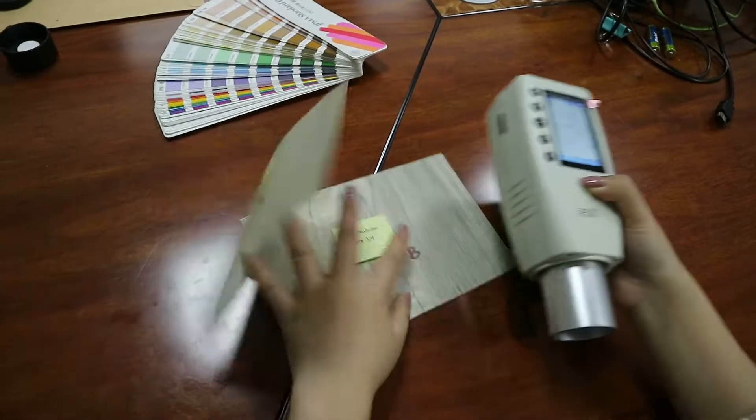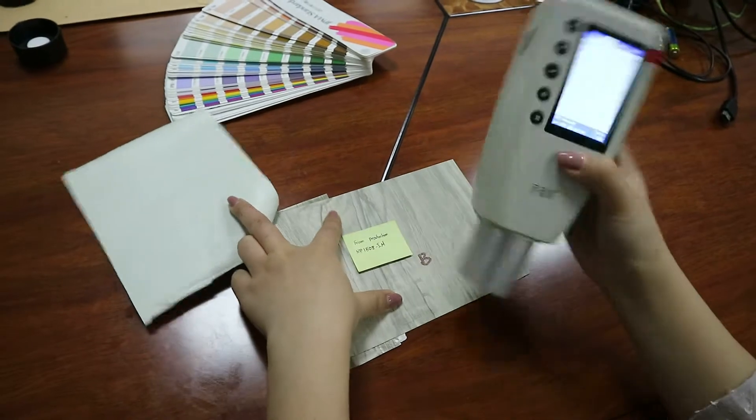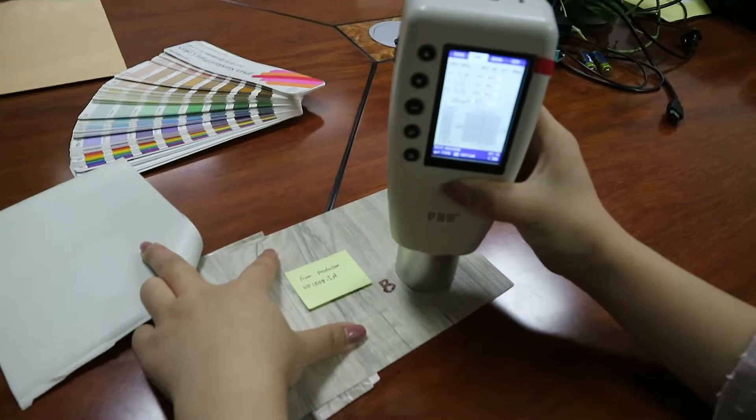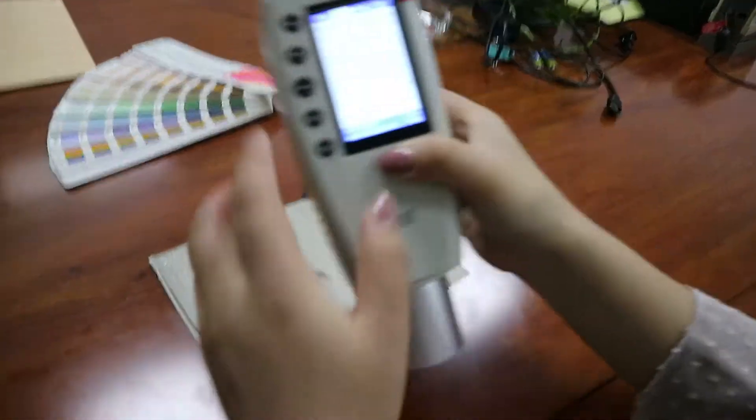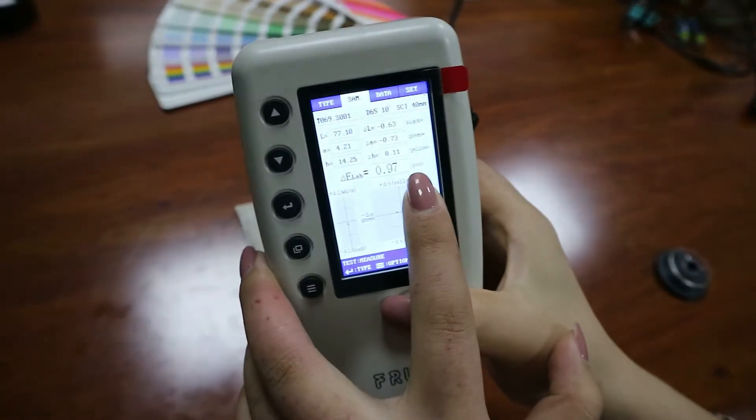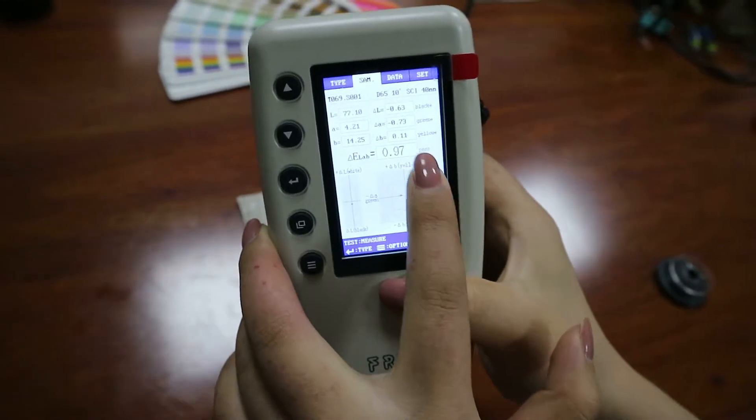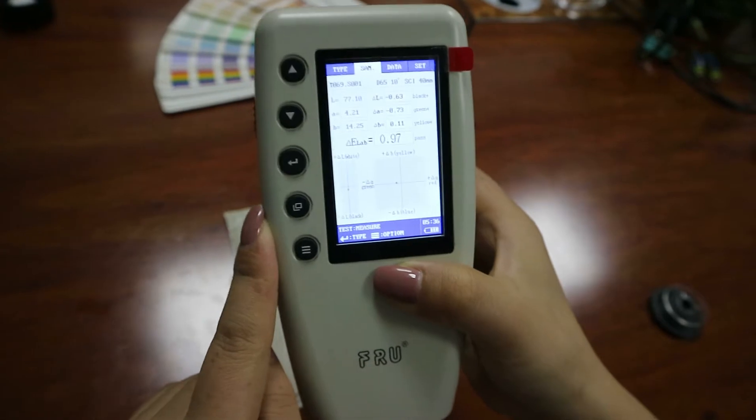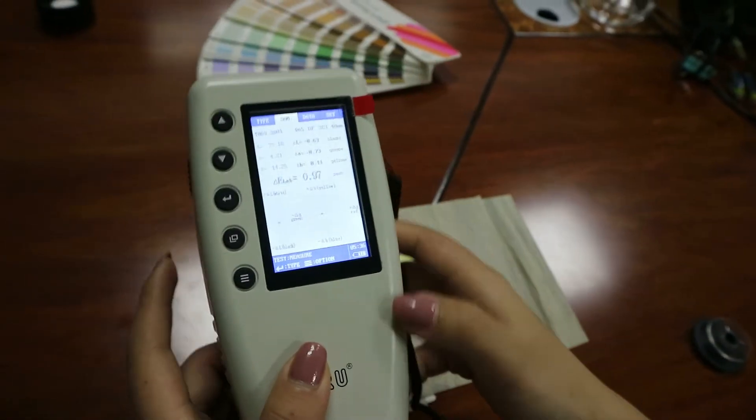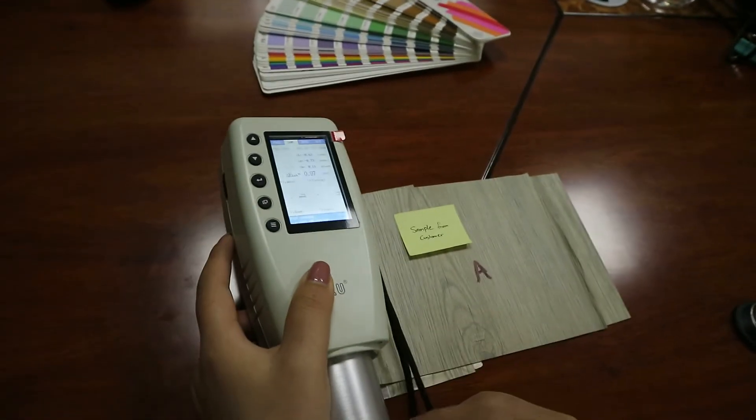We will test a similar area like here. Press test, the result comes out. The result shows pass - not a big difference because the tolerance is 2.0. This is how to monitor our machine.